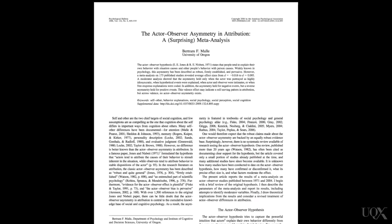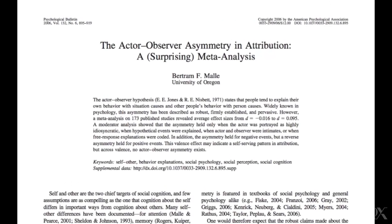The actor-observer bias is not quite as simple as we've described. A 2006 meta-analysis by Mallee of 173 studies on this effect suggests that the actor-observer bias is only apparent under a number of particular conditions — for example, when the actor and observer are intimates of each other, or when trying to explain negative events. When trying to explain positive events, the direction of the effect actually flips, and people explain their own positive behaviour in terms of their disposition to a greater extent than the behaviour of others. This brings us to an interesting question: do we distort our attributions to look good to others and feel better about ourselves?